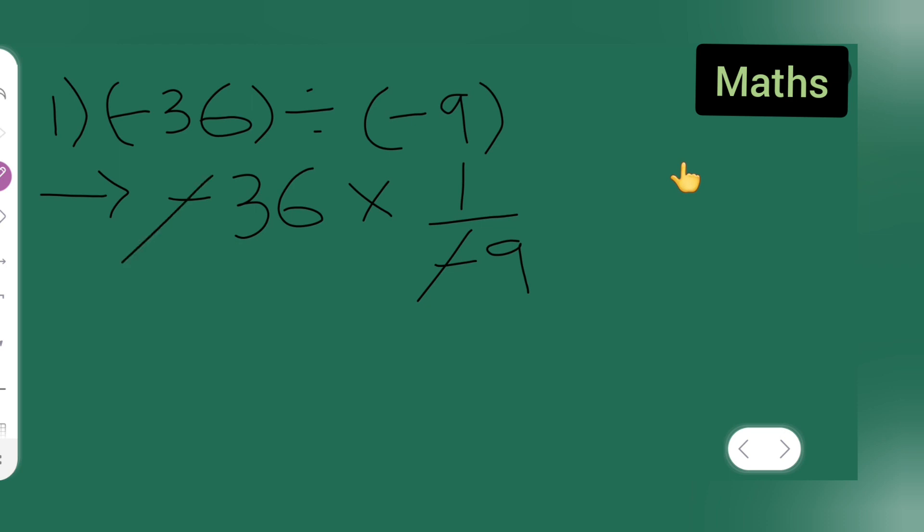Basically what will happen is minus minus will get cancelled. What will remain is 36 upon 9. So basically 9 fours are 36, so your answer will be equal to 4. This is your answer.